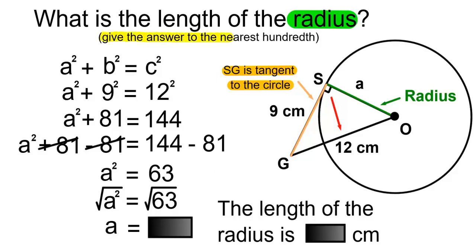Remember, we have to give the answer to the nearest hundredth. So the square root of 63 to the nearest hundredth will be 7.94. So A is equal to 7.94 centimeters.